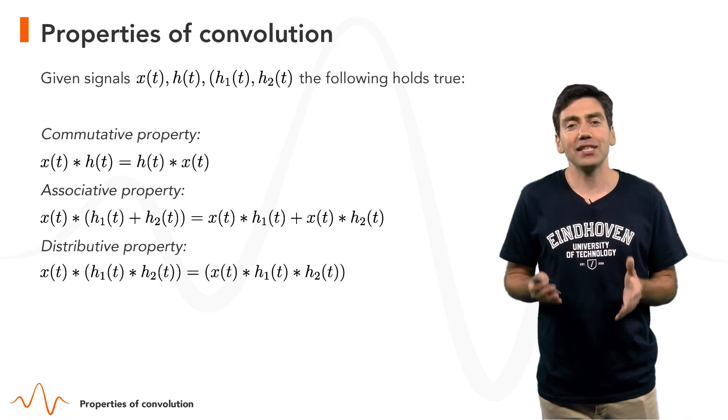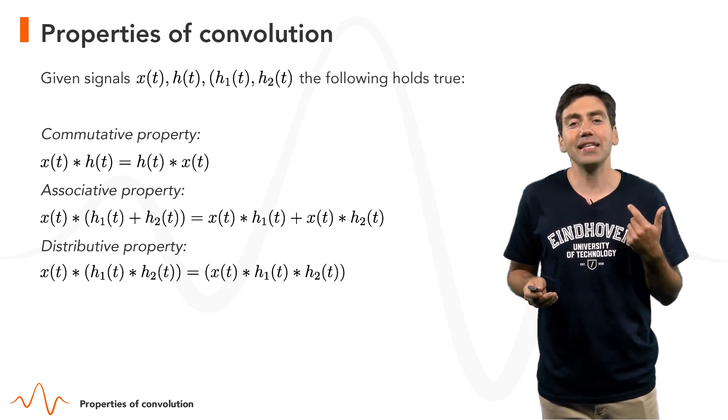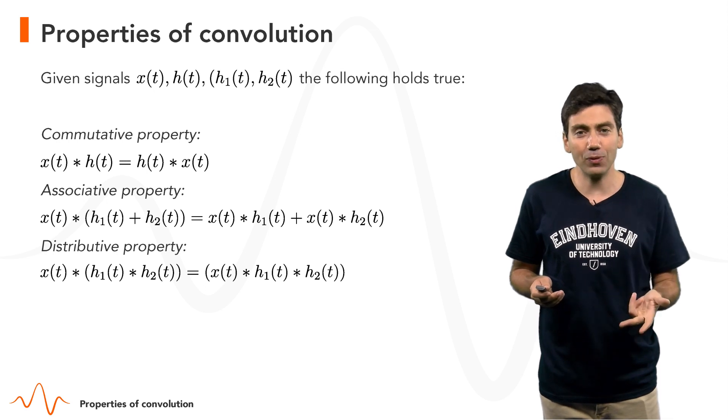In continuous time, just as in discrete time, we have the same properties of convolution: the commutative property, the associative property, and the distributive property.